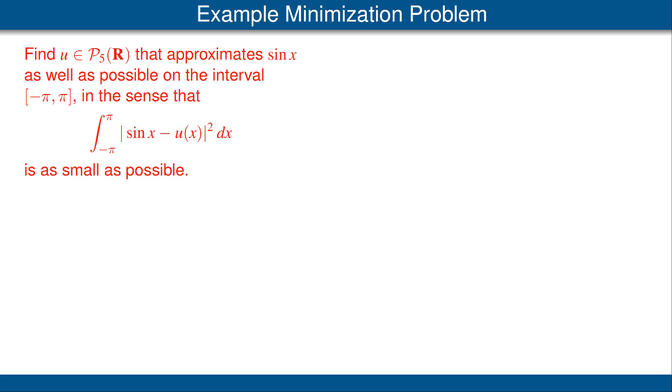Find a polynomial u with real coefficients and degree at most 5, that approximates the sine function as well as possible on the interval from minus pi to pi, in the sense that we want to minimize the square of the error, as shown here.